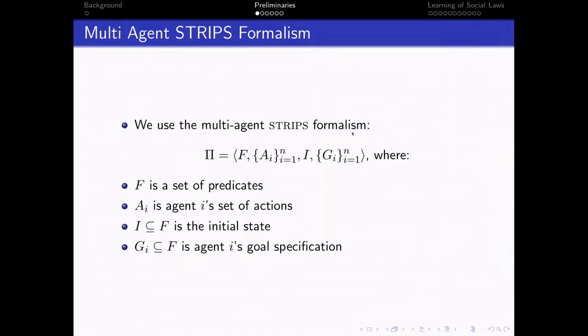We use the multi-agent STRIPS formalism in this work where F is a set of predicates. Each agent has its own set of actions AI. Capital I is the initial state, is a subset of F, and GI is the goal specification of agent I.